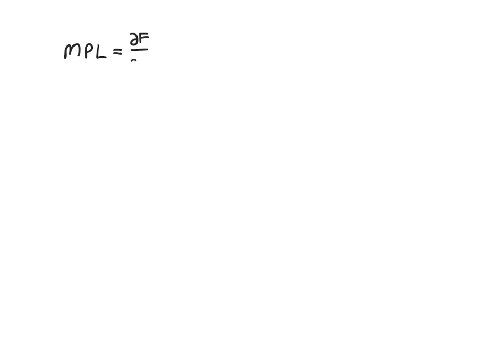Now we'll investigate the marginal products of labor and capital for the Cobb-Douglas — this part requires a little calculus. First, the marginal product of labor is dF/dL. The A and K parts don't have an L, so we leave those alone. The derivative of the L part gives us 1 minus alpha — the exponent comes down — and then we subtract 1 from the exponent, giving L to the 1 minus alpha minus 1.